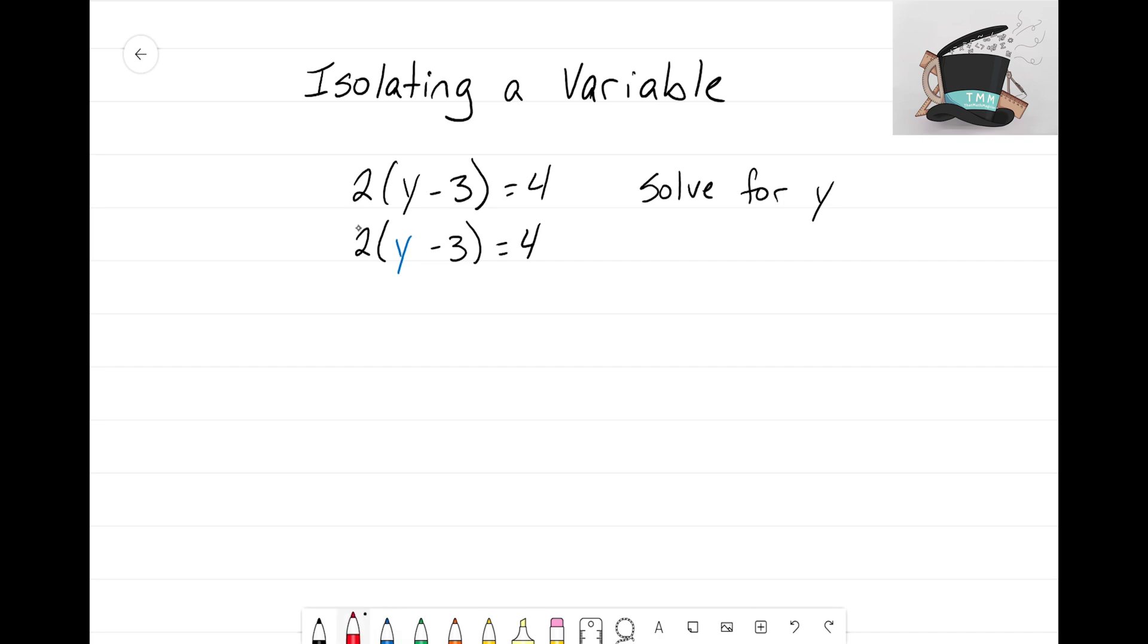Now looking at this equation here I see that 2 is multiplying this quantity in parentheses so unfortunately I know some students might want to jump and try to add 3 to both sides but since that negative 3 is trapped inside those parentheses we actually can't go to that step first.